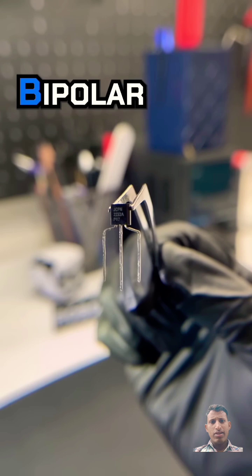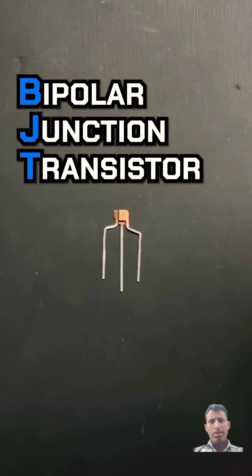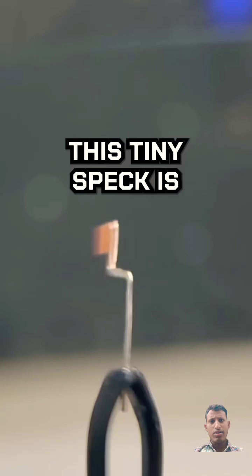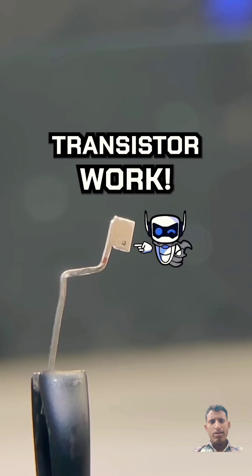This type is called a BJT, or a bipolar junction transistor. This is the base, and the two junctions, the emitter and the collector. This tiny spec is the semiconductor, which makes the transistor work.